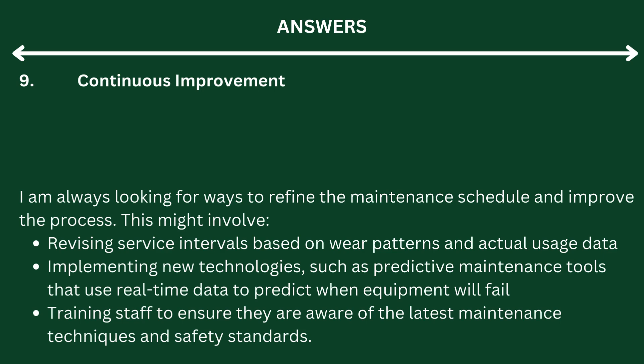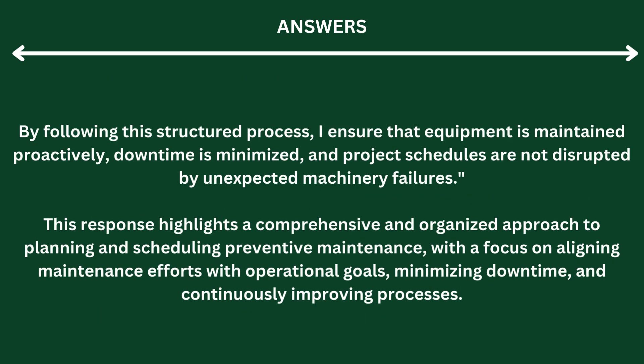Step 9: Continuous Improvement. I am always looking for ways to refine the maintenance schedule and improve the process. This might involve revising service intervals based on wear patterns and actual usage data, implementing new technologies such as predictive maintenance tools that use real-time data to predict when equipment will fail, and training staff to ensure they are aware of the latest maintenance techniques and safety standards. By following this structured process, I ensure that equipment is maintained proactively, downtime is minimized, and project schedules are not disrupted by unexpected machinery failures.